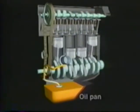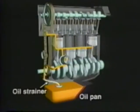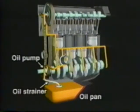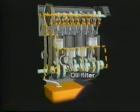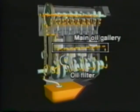Four-stroke engines normally use a pressure type lubrication system. In this type of system, engine oil stored in the oil pan is first filtered through the oil strainer, and then sent to the oil pump. The oil pumped up by the oil pump is further filtered through the oil filter, and sent through the main oil gallery of the cylinder block to each crank journal and crank pin of the crankshaft. The oil is jetted out to lubricate the pistons and cylinders. Simultaneously, oil is supplied to the valve mechanism and then returned to the oil pan.